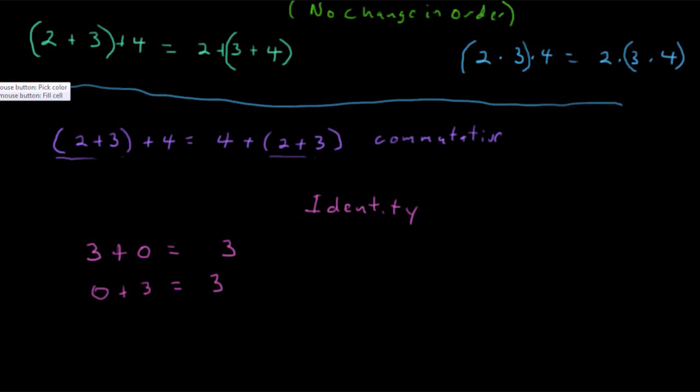And if you see an example of that, you should be able to identify that as the identity property of addition. Let's take a look at it for multiplication. What would I need to multiply 3 by to get 3? 1. 1 is the identity element for multiplication.